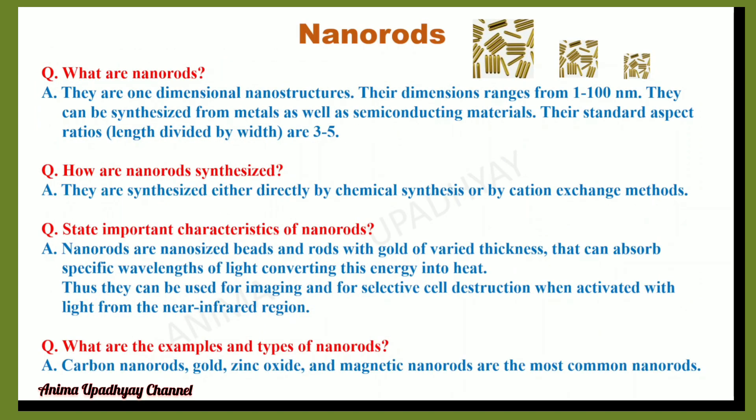Now we will learn about nanorods. What are nanorods? They are one-dimensional nanostructures with dimensions ranging from 1 to 100 nanometers. They can be synthesized from metals as well as semiconducting materials. Their standard aspect ratio — that is, length divided by width — ranges from 3 to 5. How are nanorods synthesized? They are synthesized either by chemical synthesis or by cation exchange methods.